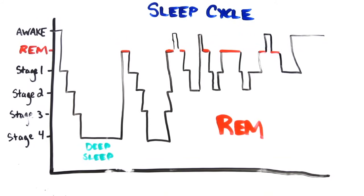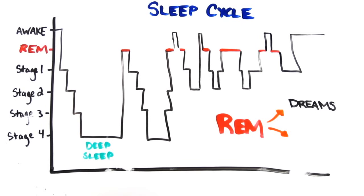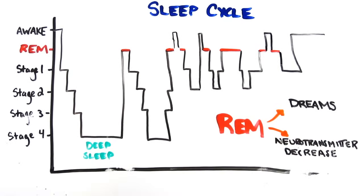As you enter REM sleep, not only do dreams occur, but a few physiological changes take place as well. Namely, your brain begins to shut off some neurotransmitters in an effort to regulate your body and in some cases stop you from acting out your dreams.